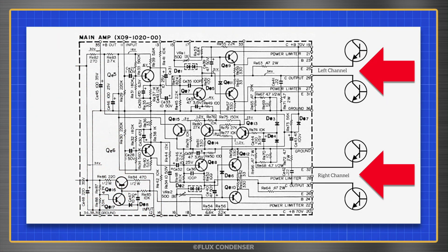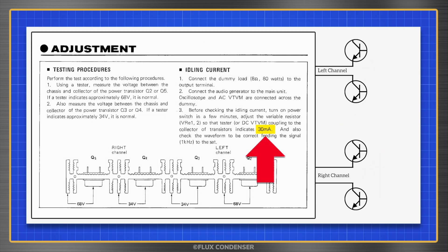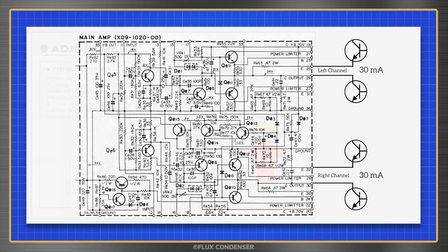We do this with no input signal, so the amp is at idle. This is called the idling current, or bias. Kenwood tells us it should be 30 milliamps. At this current, the transistors are on, but just barely.